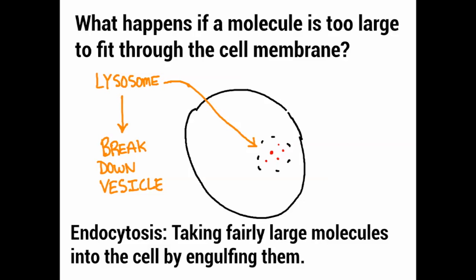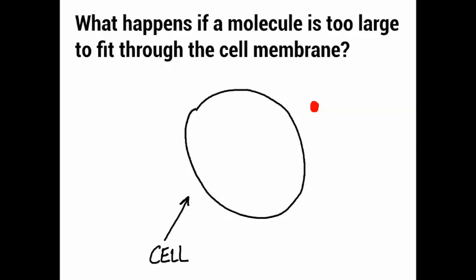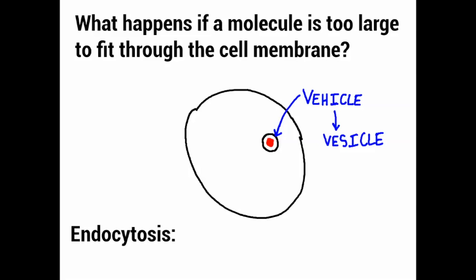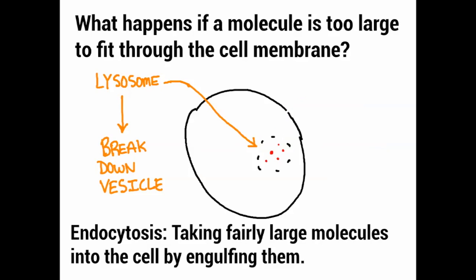That is basically how endocytosis works. To review: the molecule comes in, the cell membrane opens up just a little and creates a bubble, and that bubble becomes a vesicle. This whole process is endocytosis — taking fairly large molecules into the cell by engulfing them, just like being hit by a wave. The lysosome comes in and breaks it down, leaving freely floating particles inside the cell that the cell can use for whatever it needs.